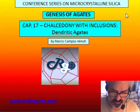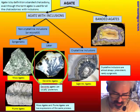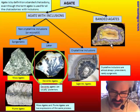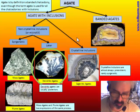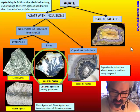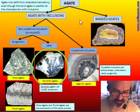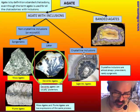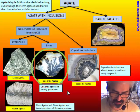In this chapter we will talk about dendritic agate. In our classification, we know that banded agates are the real agate in sensu stricto, as the definition is chalcedony with bands. But in common use, the term agate is used for all chalcedony with inclusions: moss agate, plumagate, dendritic, and sagenitic.